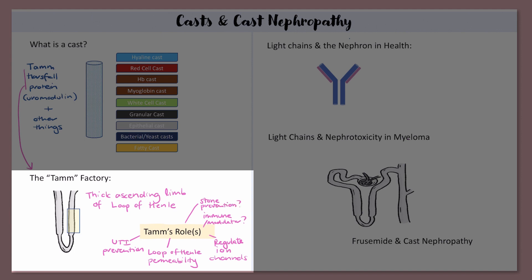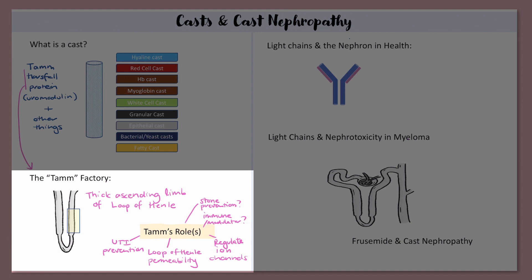There are some other theories that Tam may also have an immunomodulatory effect, as well as a role in preventing renal stones. Tam is a protein that we find in the urine of healthy people, but he also forms the matrix of all urinary casts that can be seen on light microscopy. A cast is just Tam plus anything that Tam has dragged along with him from the upper urinary tract into the urine, and these other things provide clues as to what pathologies may be lurking within the kidney.